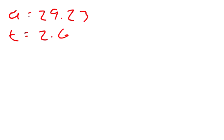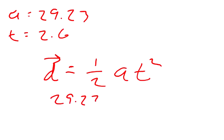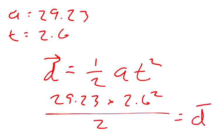We're going to set up a formula, so the displacement equals one half of acceleration times time squared. That means we want to take 29.23 times 2.6 squared divided by 2 should equal the distance traveled.